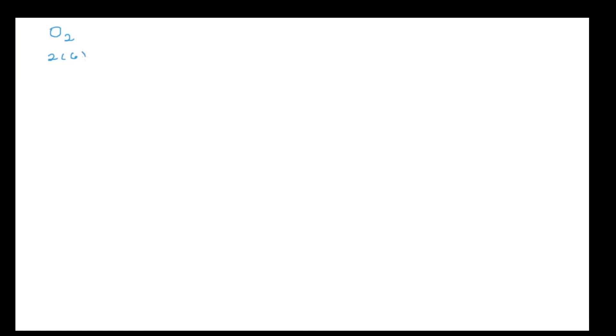These are trickier Lewis dot structures. Let's look at O₂. Your first step is to determine the number of valence electrons: two times six gives me 12. My next step is to share electrons, then add lone pairs so everyone has eight valence electrons. Now I'm going to count: I have two, four, six, eight, ten, twelve, fourteen electrons — but I should only be using 12. I'm using too many.